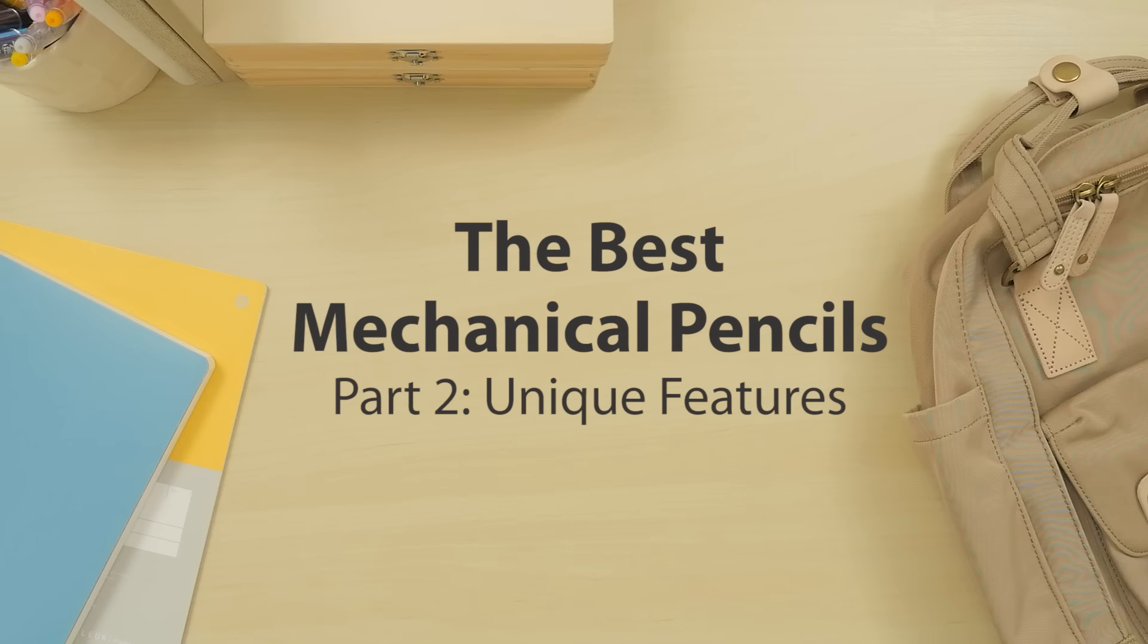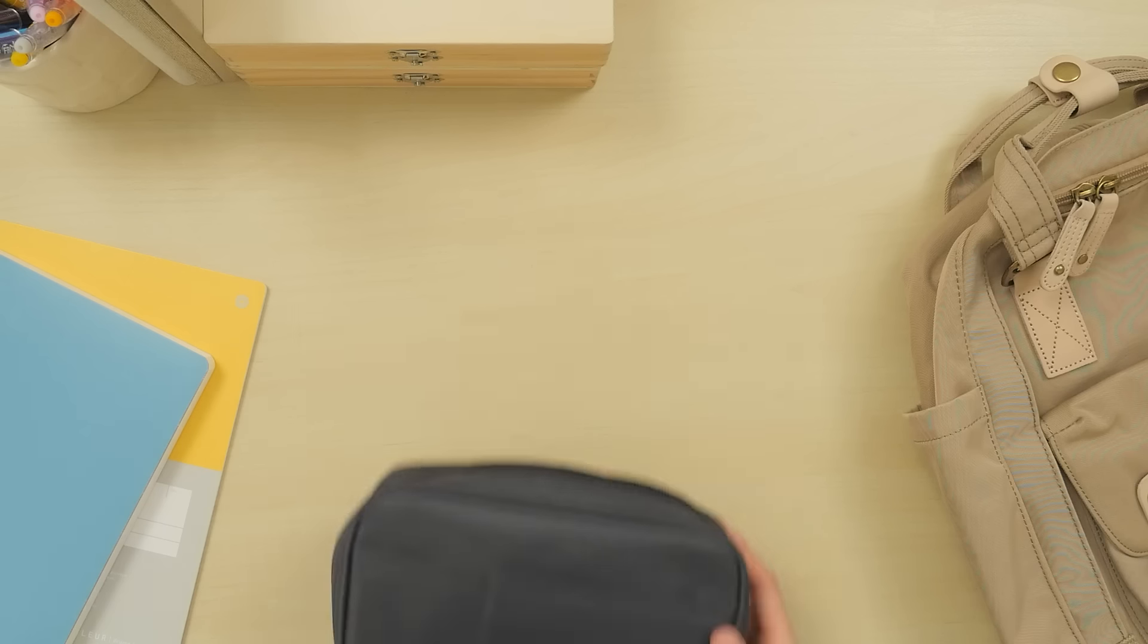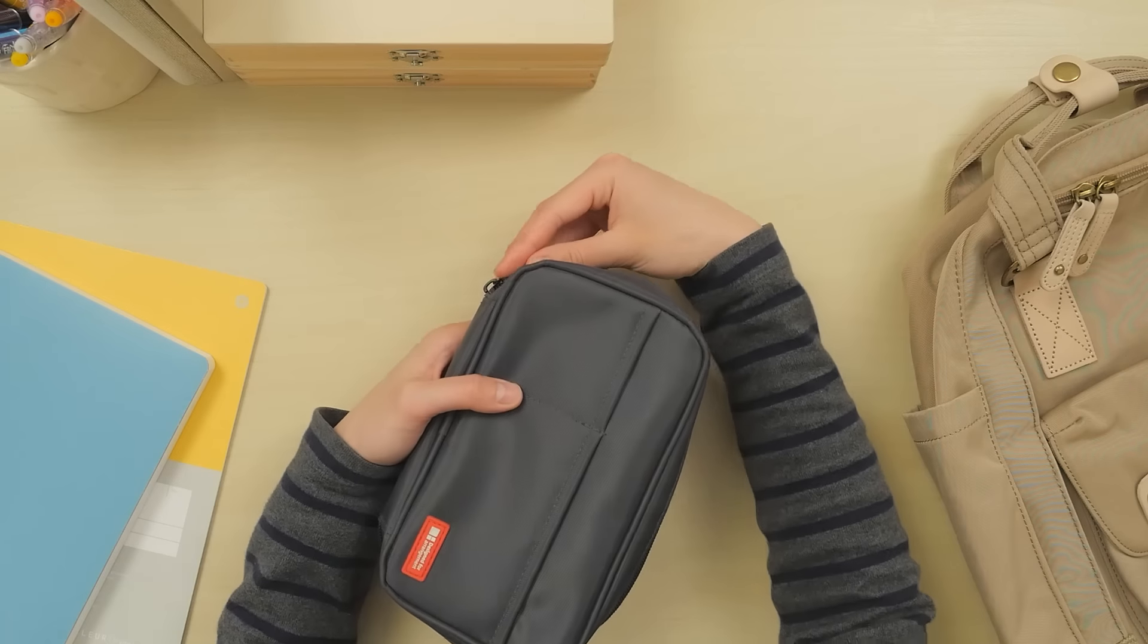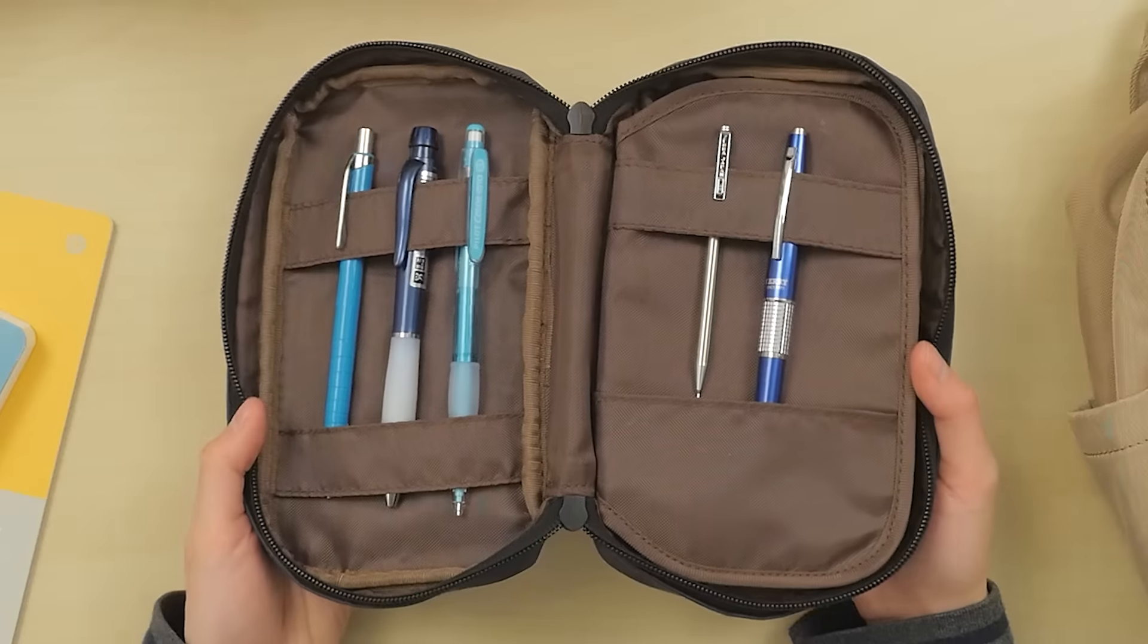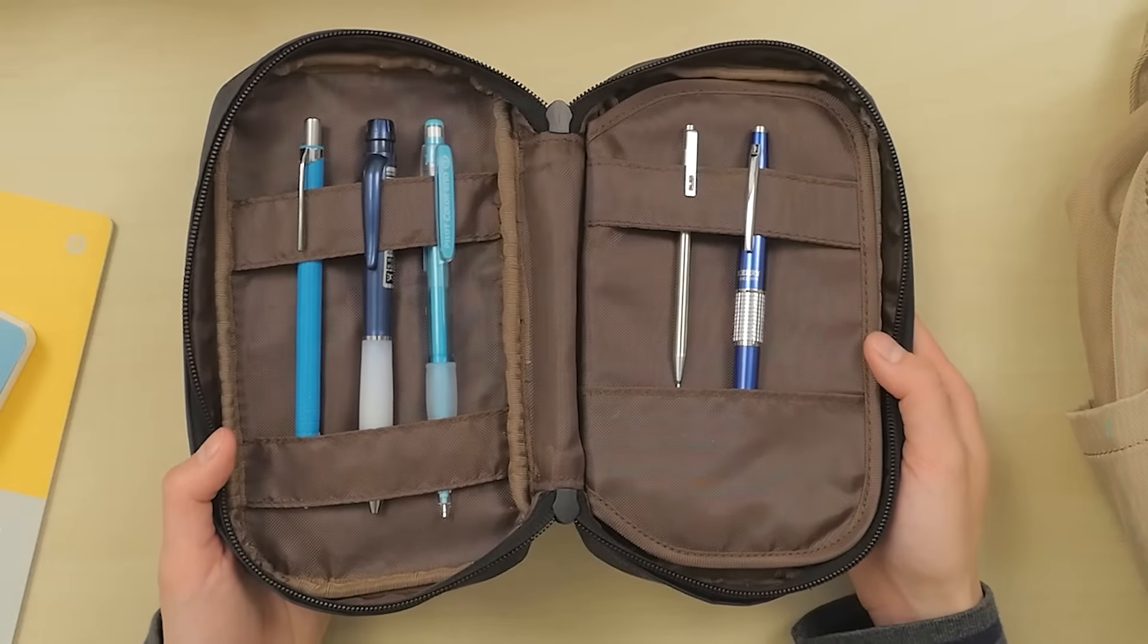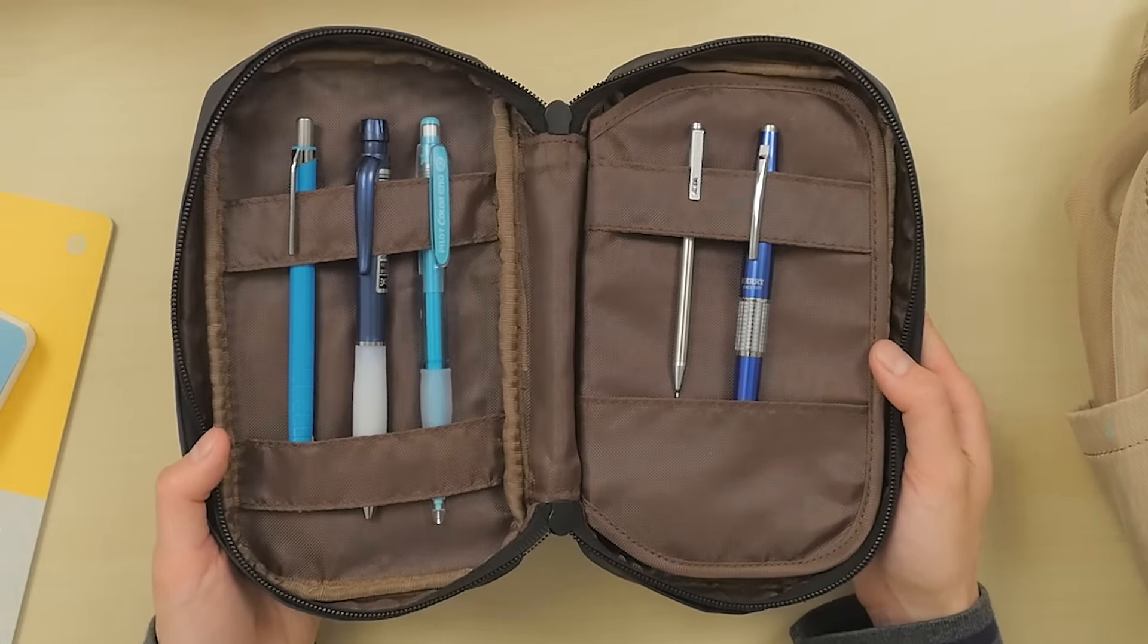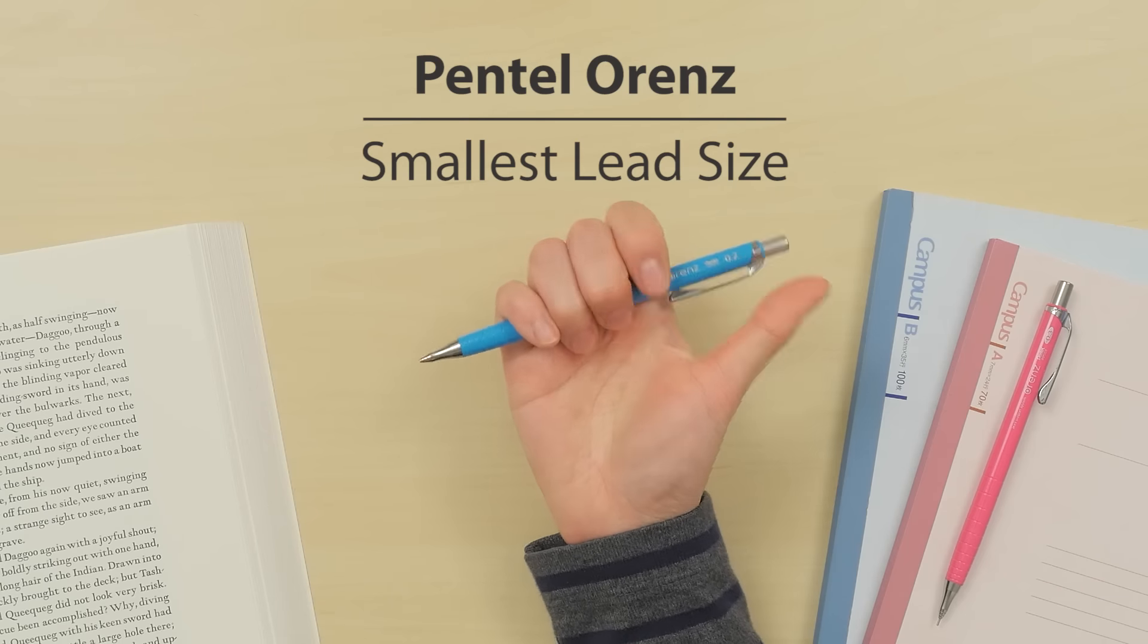The best mechanical pencils, part 2: unique features. In this video, we'll introduce five mechanical pencils with unique features that stand out from the crowd. You can find all of these at jetpens.com. The Pentel Orenz offers ultra-thin 0.2 and 0.3 millimeter lead sizes.